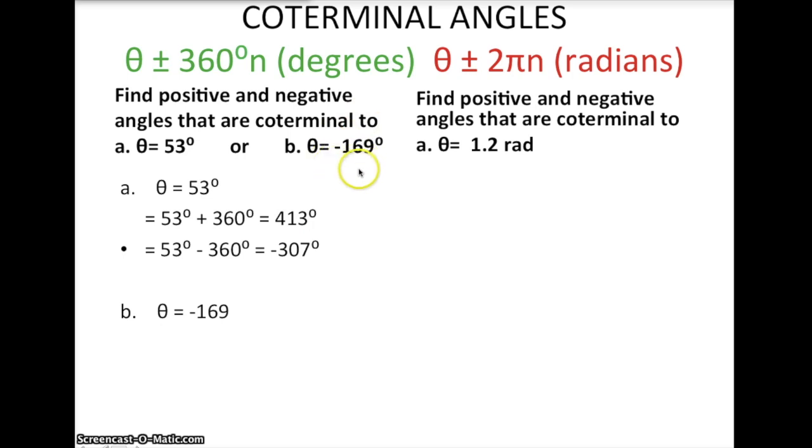Take this negative angle, which would be in the third quadrant. This is clockwise rotation. And so we would add 360, which would give us positive 191, a little over 180 degrees. And if we subtract the 360, we'd get negative 529 degrees. So a big difference by adding or subtracting 360.